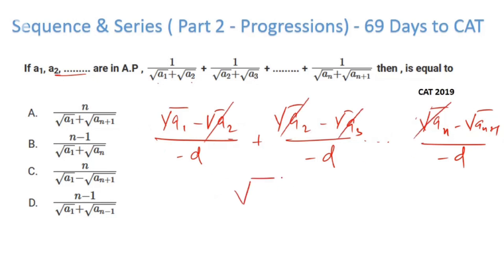So now just add it up. These alternate terms are getting cancelled. So this finally becomes √aₙ₊₁ - √a₁ divided by d. Now if I rationalize it once again—and why will I do it? Because I have seen the answer options, the root terms are in denominator.